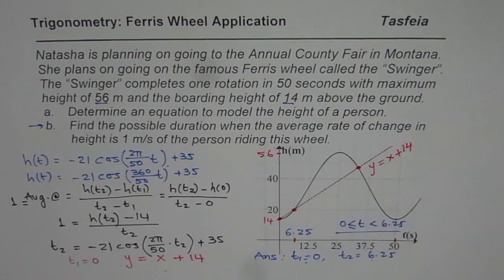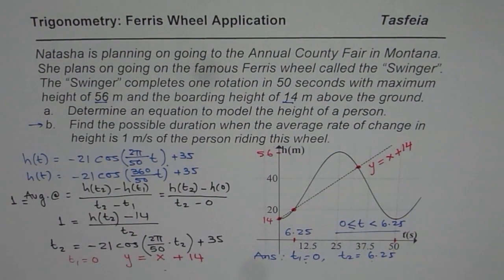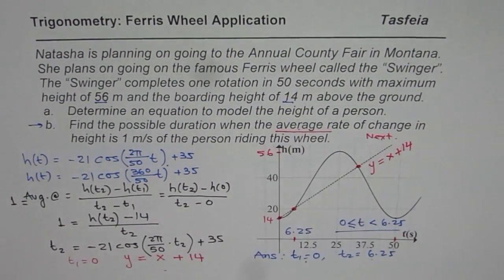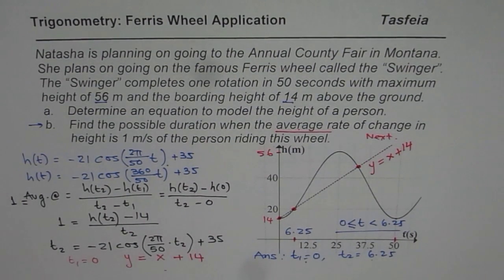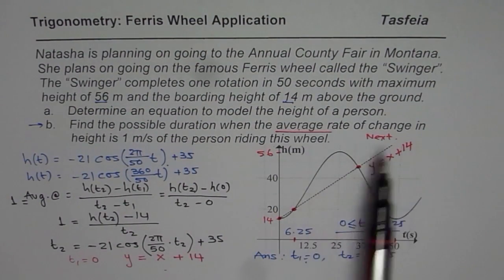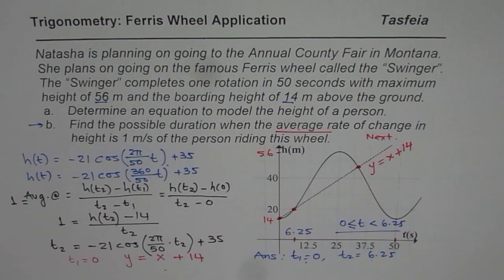I found this answer using a graph — I hope you appreciate this approach. There are times when you should look for such a graphical solution. Now, another question for you: in part C, which is the next video, we will consider the instantaneous rate of change. Find the possible instance of time when the instantaneous rate of change in height of a person is 1 meter per second. It is up to you whether you go for an algebraic equation or a graphical solution — let me know if you have ideas about it. Thank you and all the best.